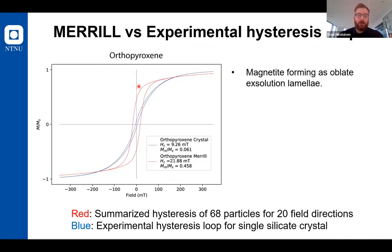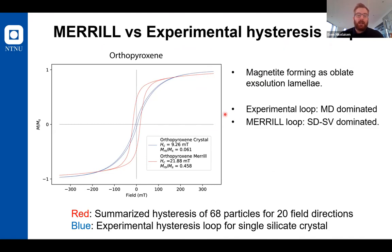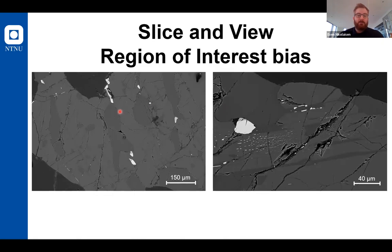Such a hysteresis you can see here in red, which is comprised of 68 particles, which are exsolution magnetites in OPX. The blue curve is a single crystal measurement in a lab derived from the same sample. We can see that the experimental loop is multi-domain dominated, and our calculated loop is single domain to single vortex domination. The reason for this offset is what we estimate to be a regional difference.